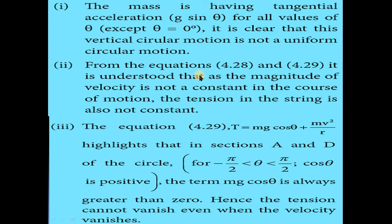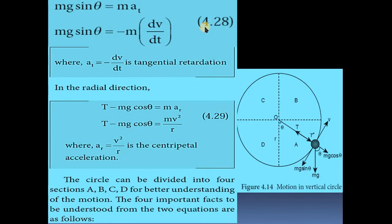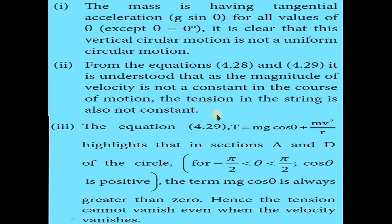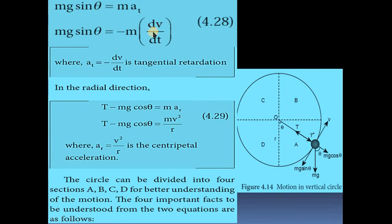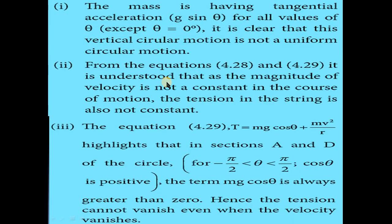The second point is that from equations 4.28 and 4.29, the magnitude of the velocity is not constant — velocity appears as dV/dt and V squared by R. Since velocity is not constant in the course of motion, the tension in the string is also not constant.